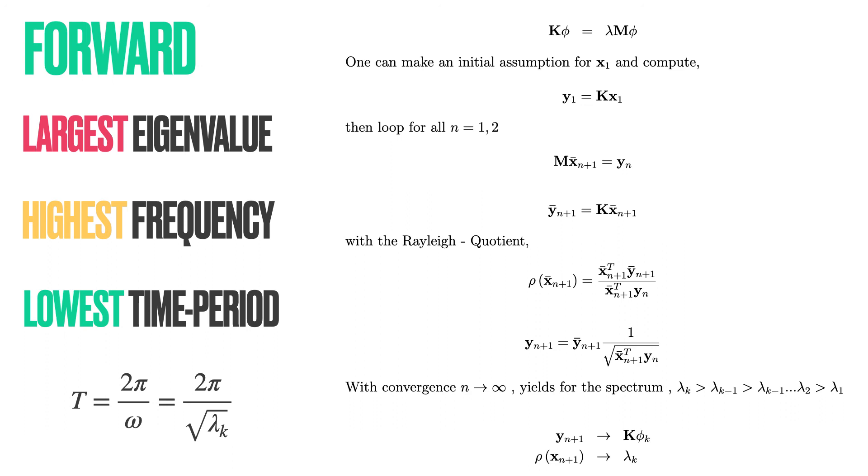To recap, the forward iteration gives us the largest eigenvalue, the highest frequency, and the lowest time period.